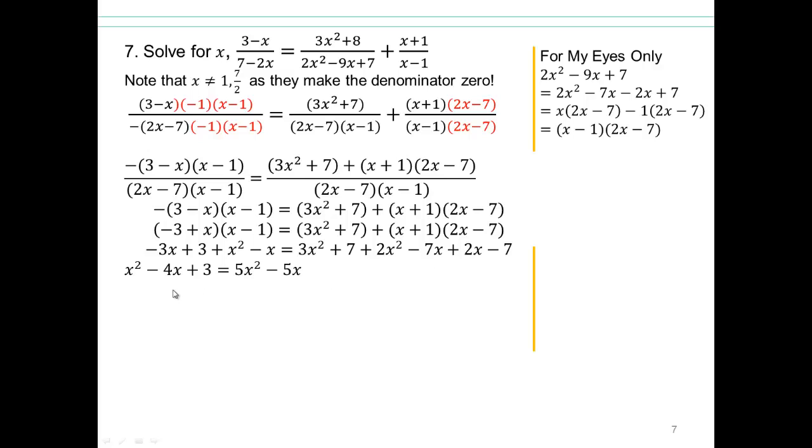Now, remember, we cannot solve unless you have 0 on one side. So let's bring all these terms to the other side. So subtract x squared, add 4x, subtract 3, and add like terms. Now, factor that. You can see how if you could not factor, you would be in big trouble here.